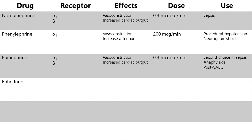Ephedrine is another medication primarily used as a short-term vasoconstrictor. It has a modest effect on alpha receptors, but mostly works by forcing the release of norepinephrine. It's used rarely as a post-anesthetic hypotensive agent because it relies on the secondary release of norepinephrine and becomes increasingly ineffective over time as the norepinephrine supply runs out. It's usually given in 5 to 10 milligram boluses.